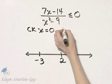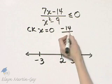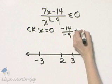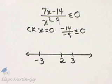We'll check x is equal to zero. That would be this region right here. If x is zero, I'll have negative 14 in the numerator. If x is zero, I'll have negative 9 in the denominator.